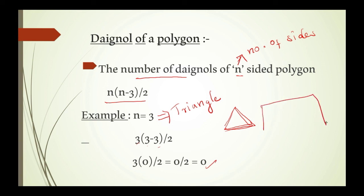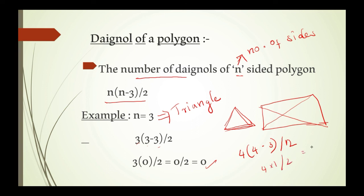When it comes to a quadrilateral, it has 4 sides and 2 diagonals. Let me prove it with the formula. Taking n as 4: 4 into 4 minus 3 by 2 gives 4 into 1 by 2, which is 4 by 2, equal to 2. Here also I have got 2 diagonals. So the smallest number of diagonals in a polygon is 2, and that is a quadrilateral.